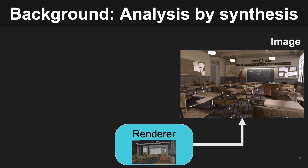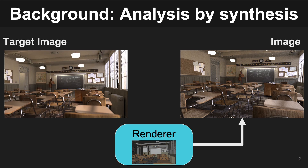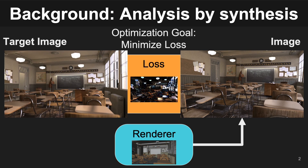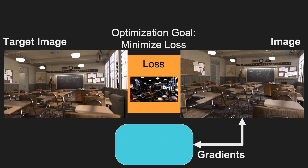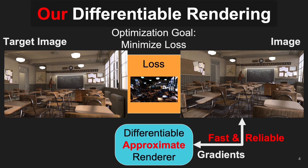In analysis by synthesis, you have a renderer that can produce images, and you are given a target image which you would like to have match. This is done by minimizing a loss function that measures the difference between the two images. In differential rendering, this is augmented so your renderer can produce gradients that can aid the optimization process. Our contribution is to build an approximate renderer that is still very fast, but whose gradients are reliable enough for classic computer vision tasks.